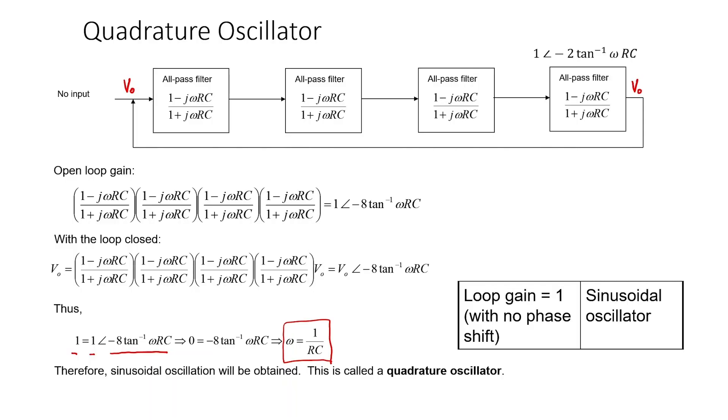Since the loop gain in this particular filter equals 1, the Berkhausen criterion tells us that this particular circuit can be a sinusoidal oscillator. And indeed, that's what it is.